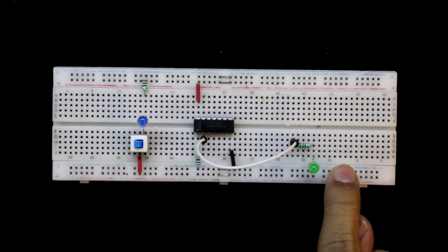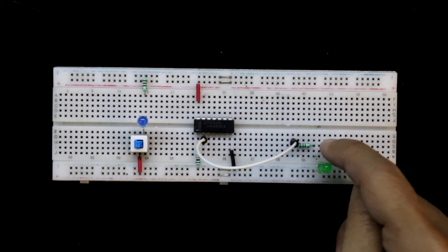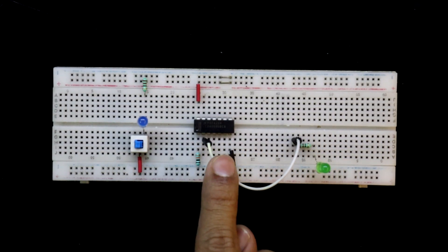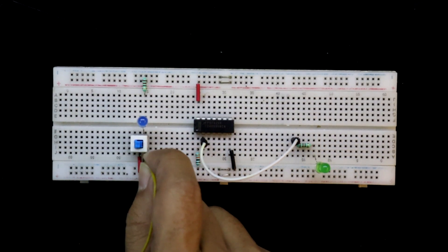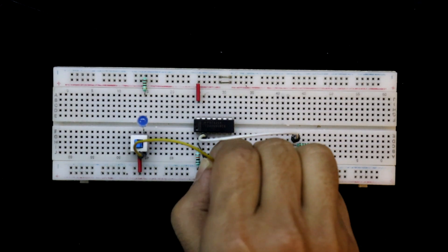So this is the connection. The positive pin of the LED is connected to the resistor, and then it is connected to pin number 2. And this switch is connected to pin number 1.